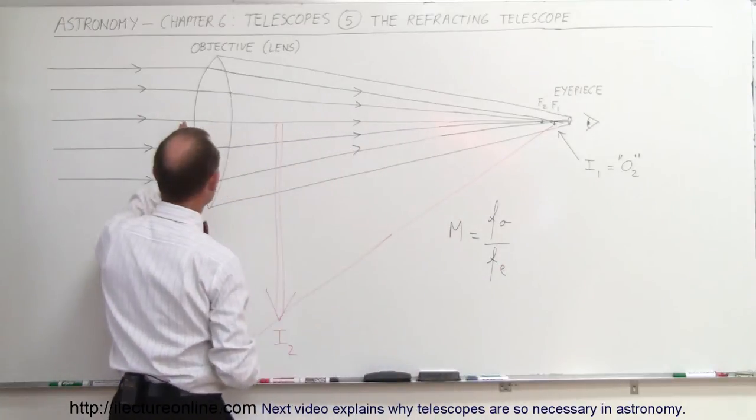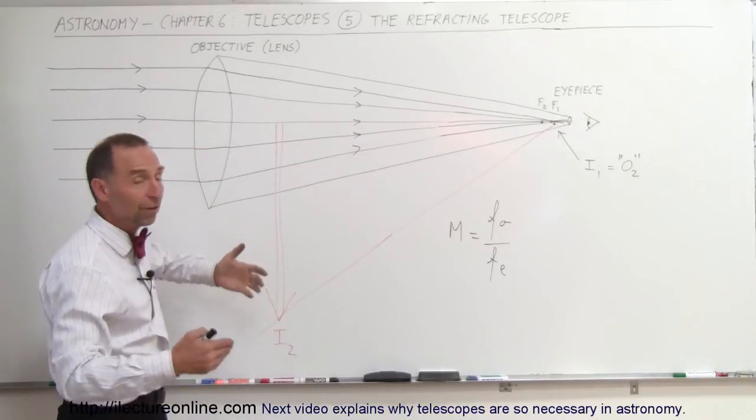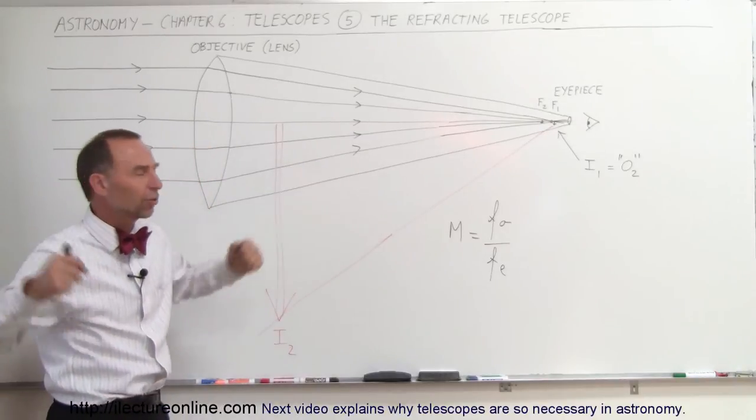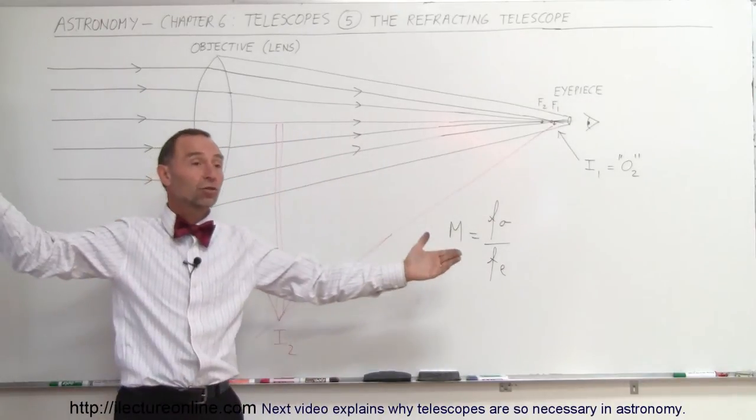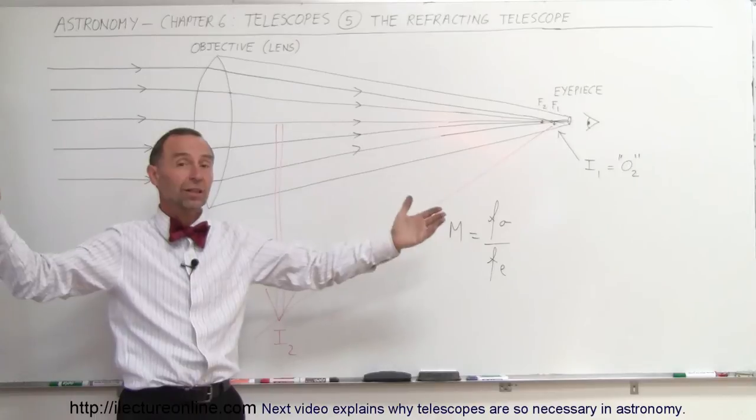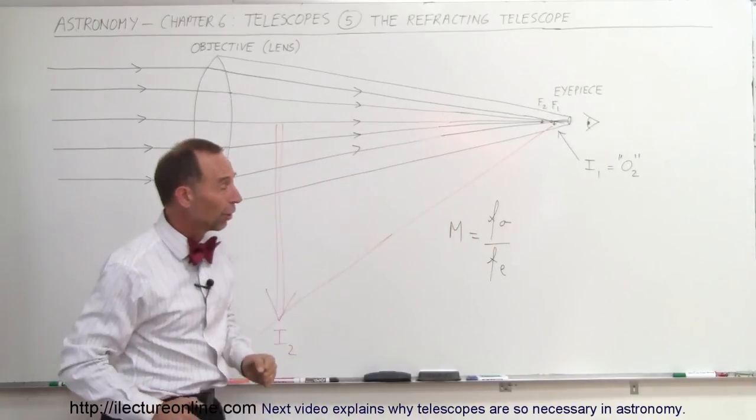So typically, the focal length of the objective can be 50 centimeters, 100 centimeters, 3 feet, 4 feet, 5 feet, however long your telescope is. It's basically almost the length of your telescope. If you have a really long telescope that's 100 feet or 200 feet long, then of course, the focal length of the objective is a very large focal length.